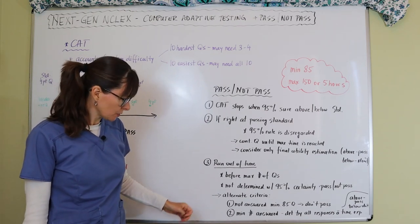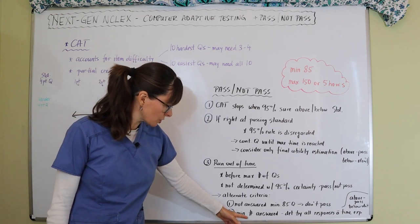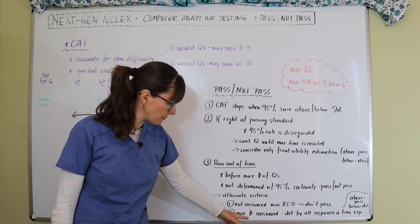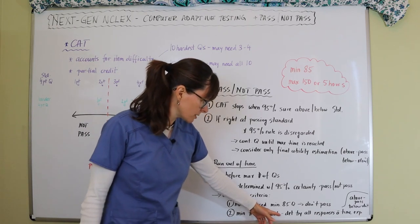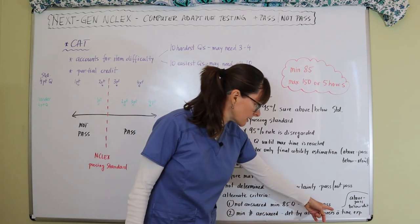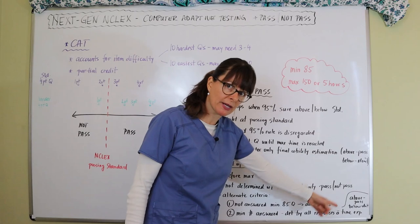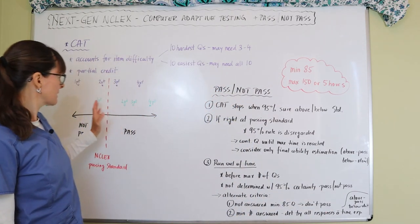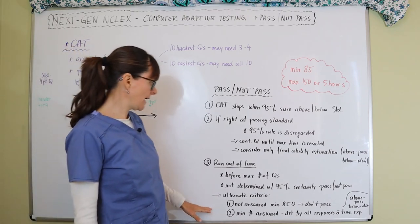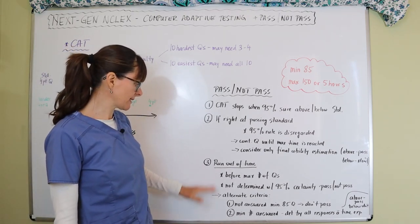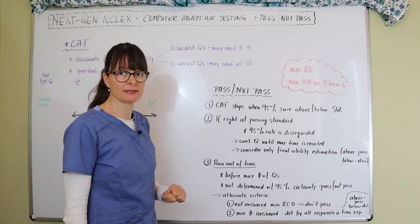The other alternative is if the minimum number of questions has been answered, then pass/fail is determined by all responses before time expires. This means have you been more on the passing or non-passing side, and when time runs out, that will determine whether you pass or not.